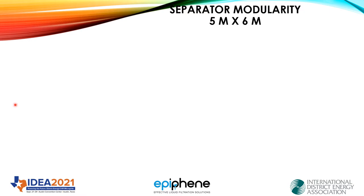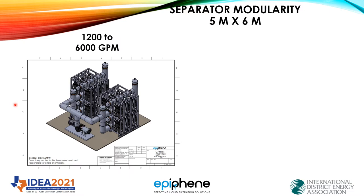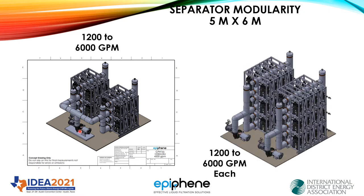Not only did we have requirements where we could go horizontally in our expansion, but we can also go vertically. We were challenged to provide a very high flow in a five-meter by six-meter space. Here's our first option: 1,200 to 6,000 gallons per minute, where each side is half of that — so 600 to 3,000 on each side fed by a single pump, centrifugal or split case. Then they asked us to increase the flow rate, so we went up another level — each one of these can handle 6,000 gallons a minute apiece for a total of 12,000 gallons a minute.